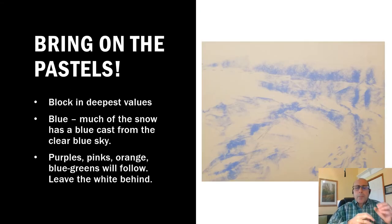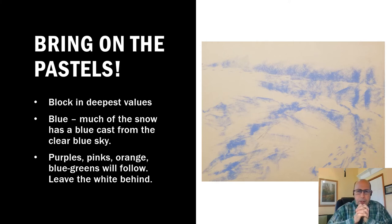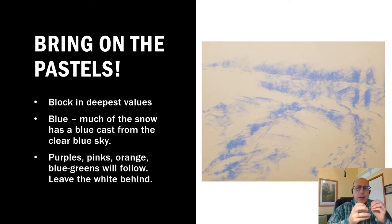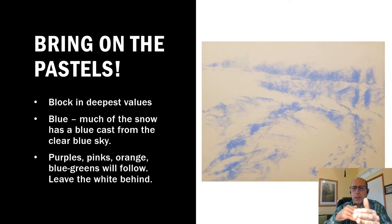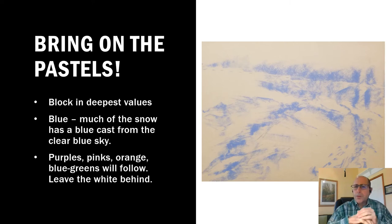Now we're bringing on the pastels. This is a sketch in blue pastels — very hard blue pastel. Following this sketch, I applied an alcohol wash to darken it up a bit. These are representing the darkest values in the painting: the tree line in the back, the gully going up, and the shadowed areas of the snow.